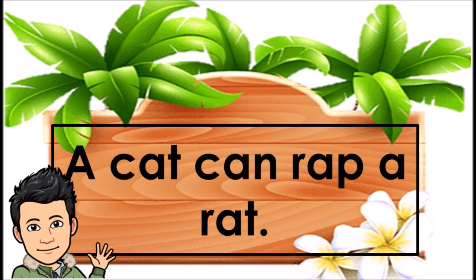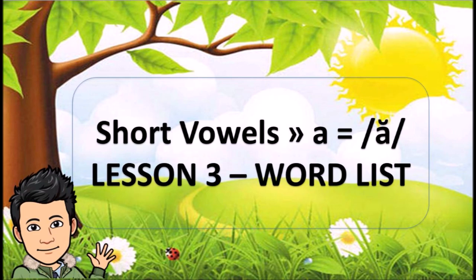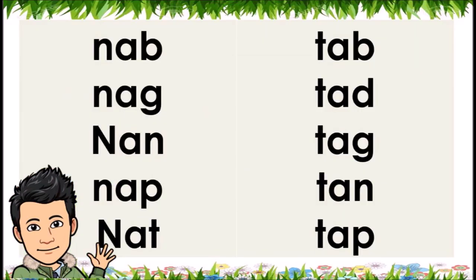A cat can rap a rat. Short vowels: A equals A. Lesson 3. Word list: Nab, nag, nan, nap, nat, tab, tad, tag, ten, tap.